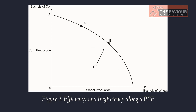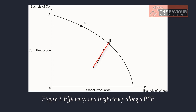If Andhra Pradesh's climate and soil are best suited for corn and Punjab's for wheat, a law enforcing Punjab farmers to produce corn and Andhra Pradesh farmers to produce wheat would result in less of both. In such a case, society would be at point A instead of point B.